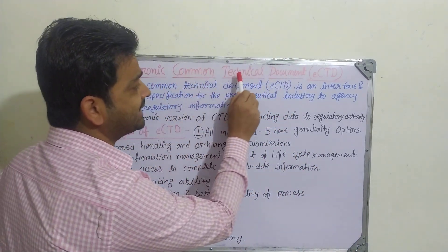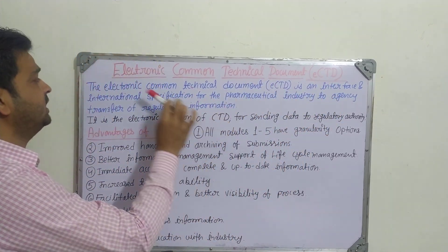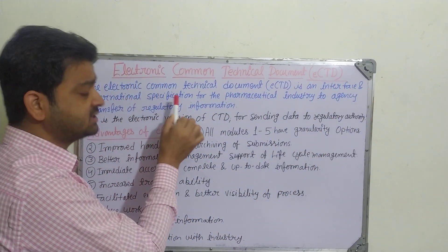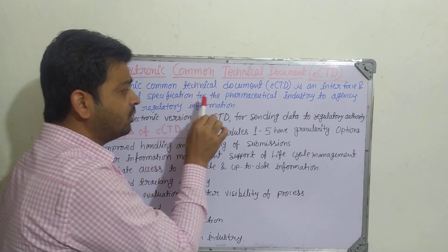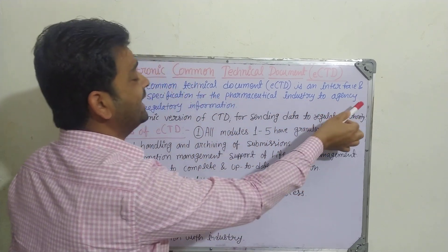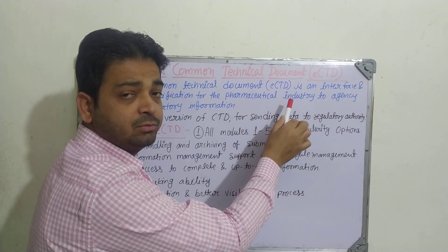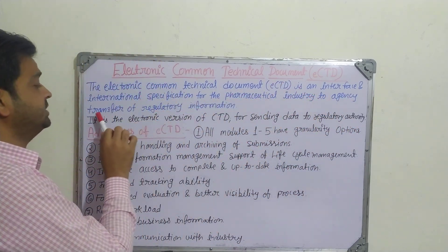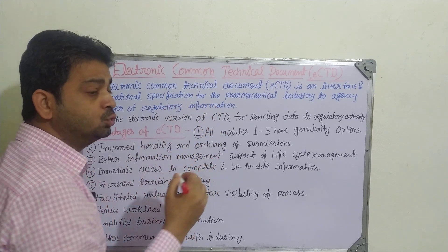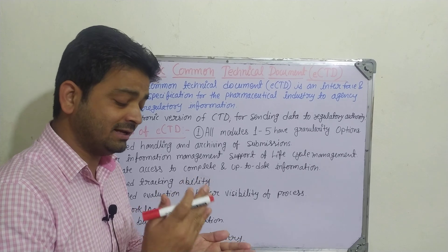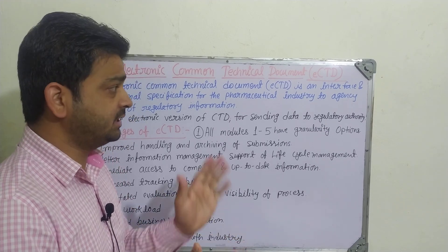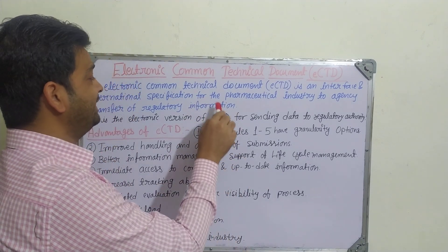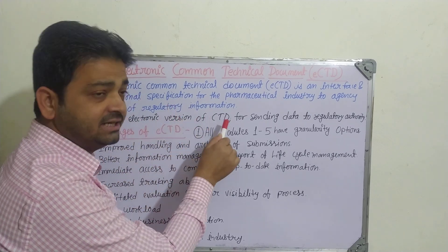Coming to the electronic common technical document eCTD — what it is actually: it is an interface and international specification, just like CTD only, for the pharmaceutical industry to agency. The pharmaceutical industry is going to register their formulation or their medicines to the regulatory authority or any agency like FDA, conveying information about the formulation — how the clinical, pre-clinical, and non-clinical studies have been done in modules one to five, as we discussed in CTD.